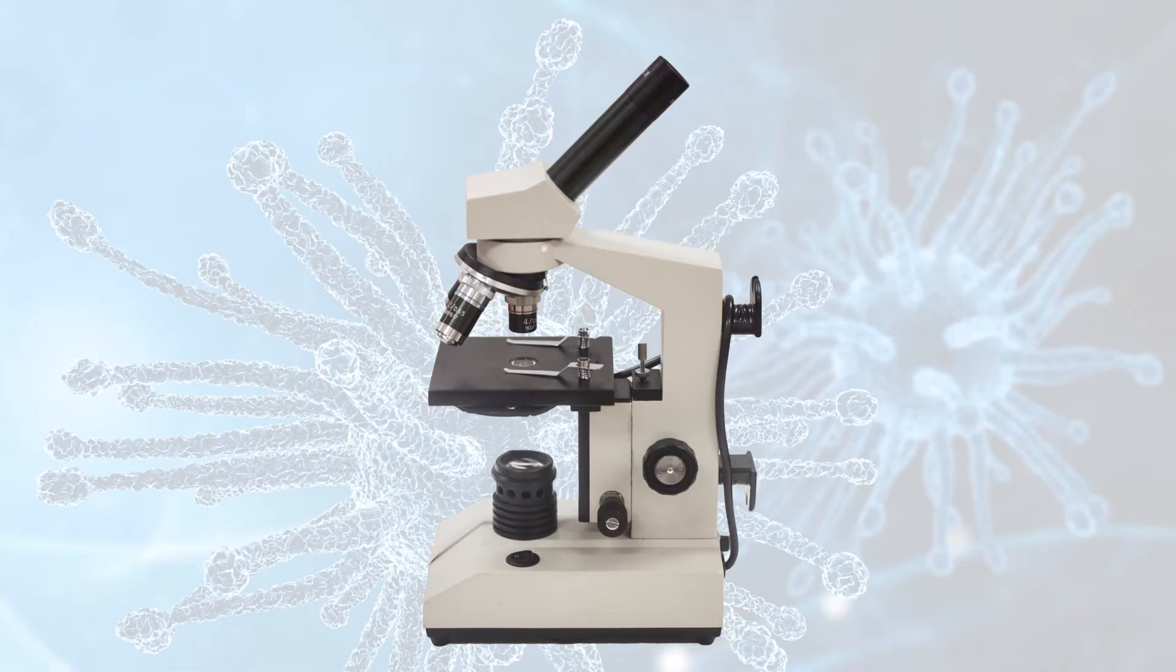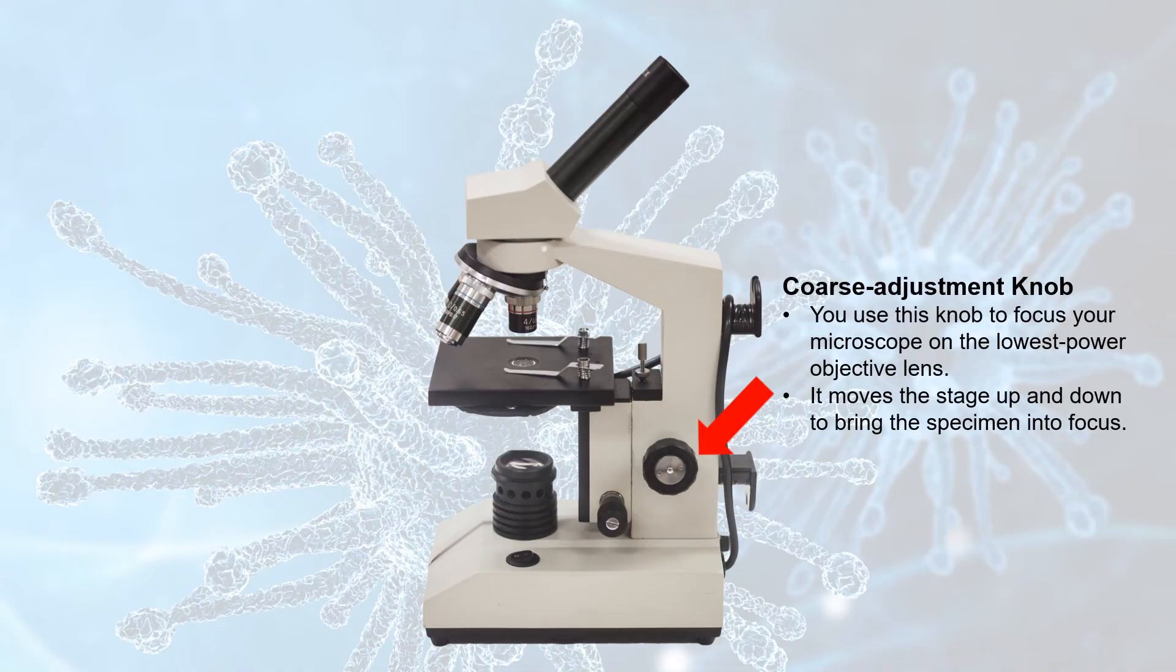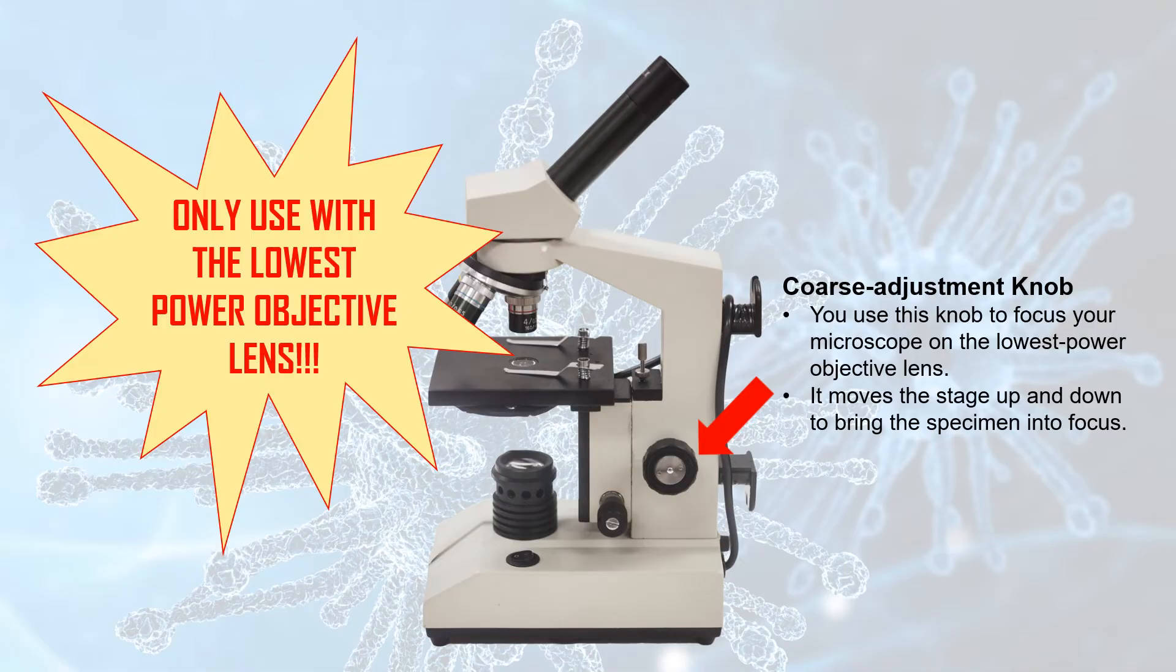When focusing the microscope to view a specimen, you can use two adjustment knobs. This one, right here, is called the coarse adjustment knob. You use this knob to focus your microscope when it's on the lowest power objective lens. Remember, that's the shortest or smallest objective lens. Now, the coarse adjustment knob moves the stage up and down quite a bit. So, you only use this knob when the microscope is on the lowest power objective lens. Otherwise, you could damage an objective lens and make your teacher cry. Don't make your teacher cry.